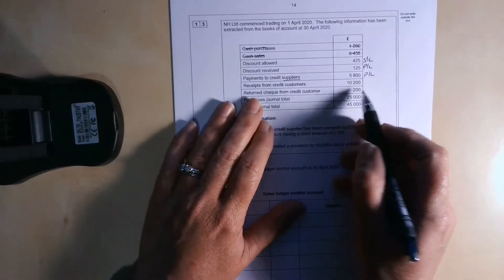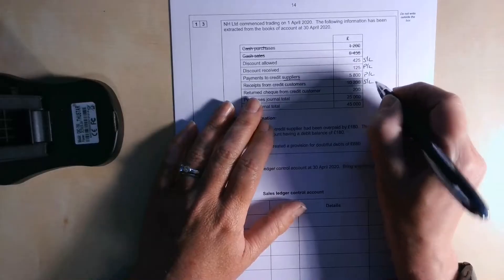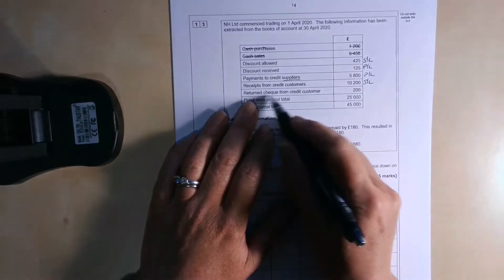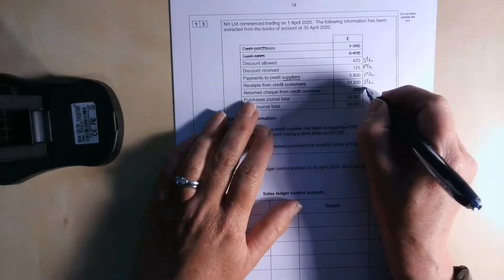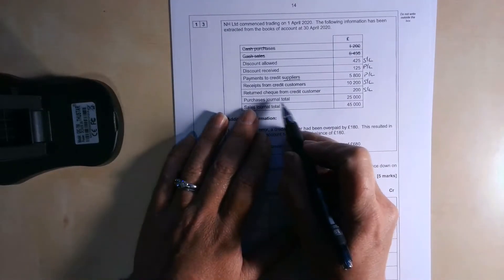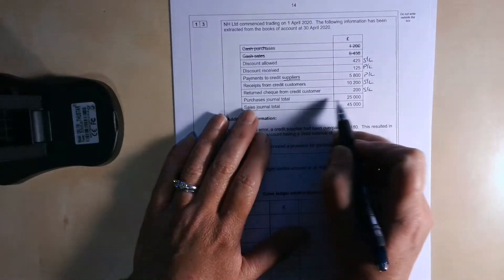Receipts from credit customers, £10,200. Because it's customers, it's to do with sales. That's obviously going to be sales ledger. A return to check from a credit customer, also sales ledger. And the purchases journal total, that is the total for purchases. That's all the invoices.